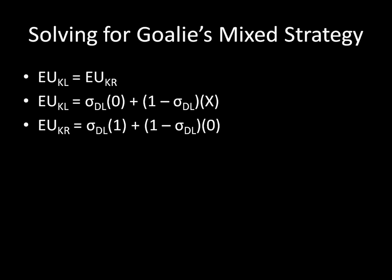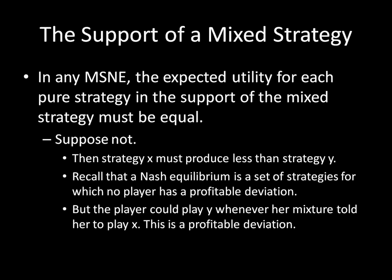That only works for the two-strategy case. What happens in more complex situations? Let's quickly prove why equal expected utilities must hold. In any mixed strategy Nash equilibrium, the expected utility for each pure strategy in the support must be equal. To show this, suppose instead it's not the case and prove by contradiction. Then some strategy X must produce less expected utility than strategy Y in the support — X is the worst of all strategies in the support.